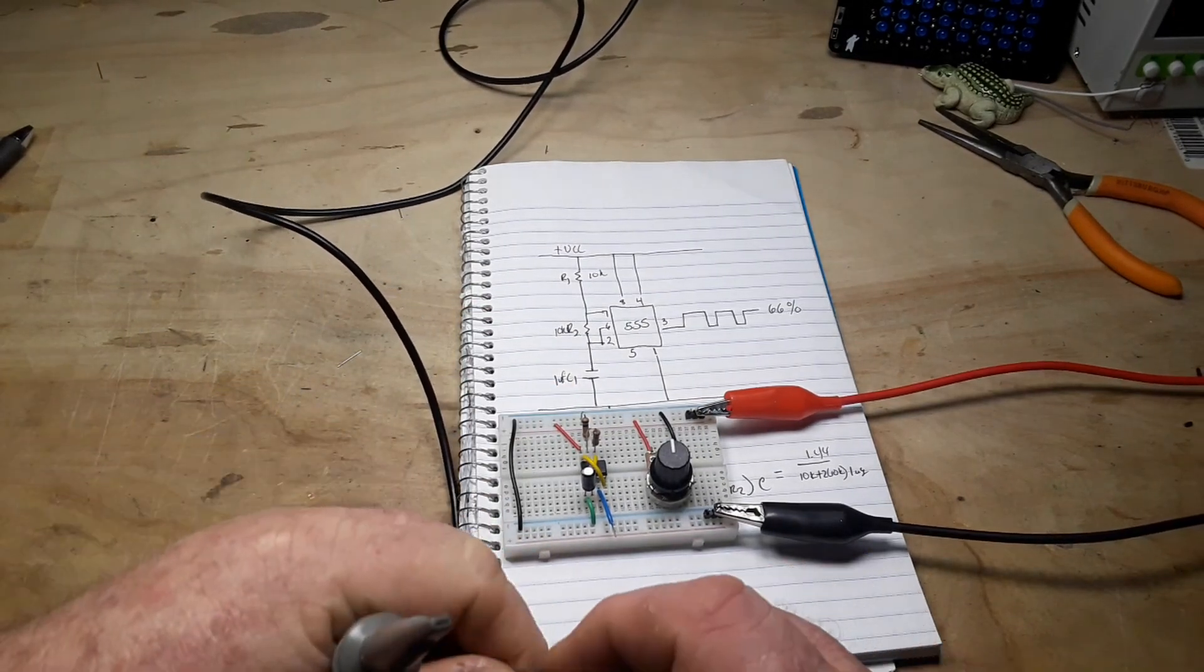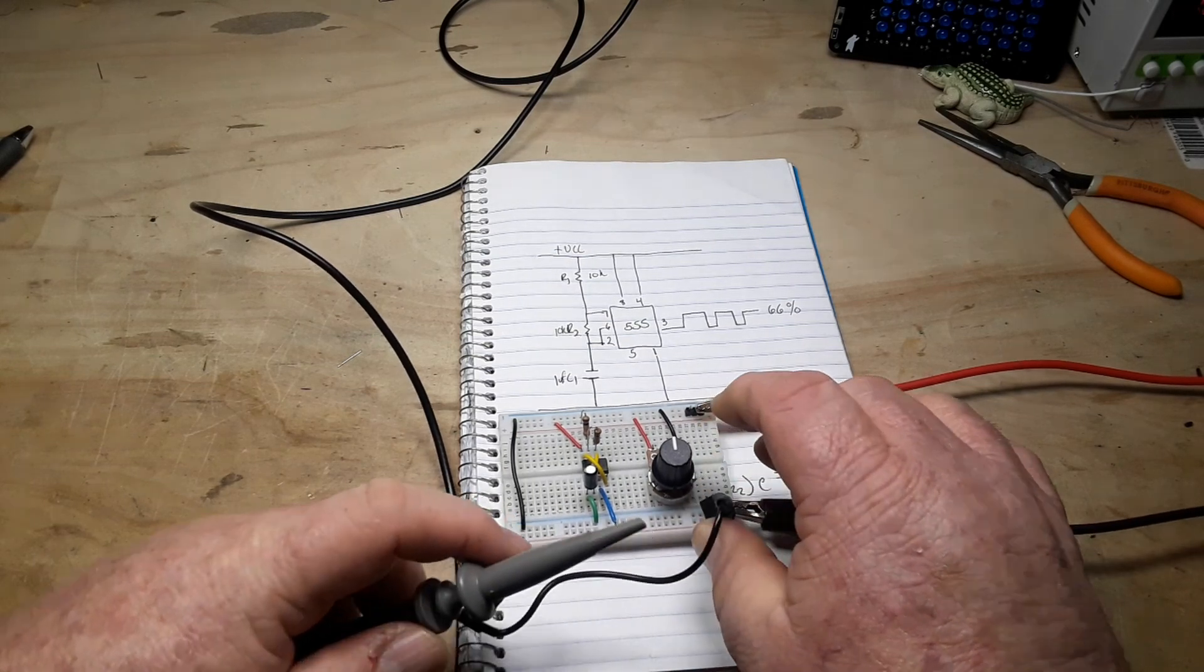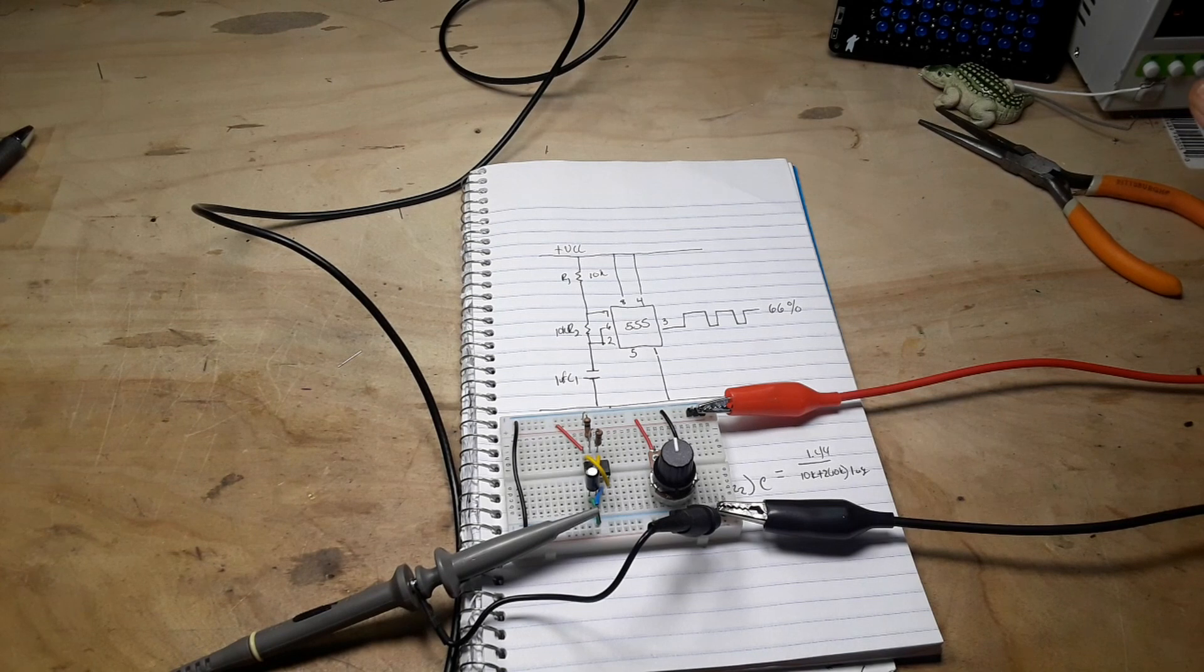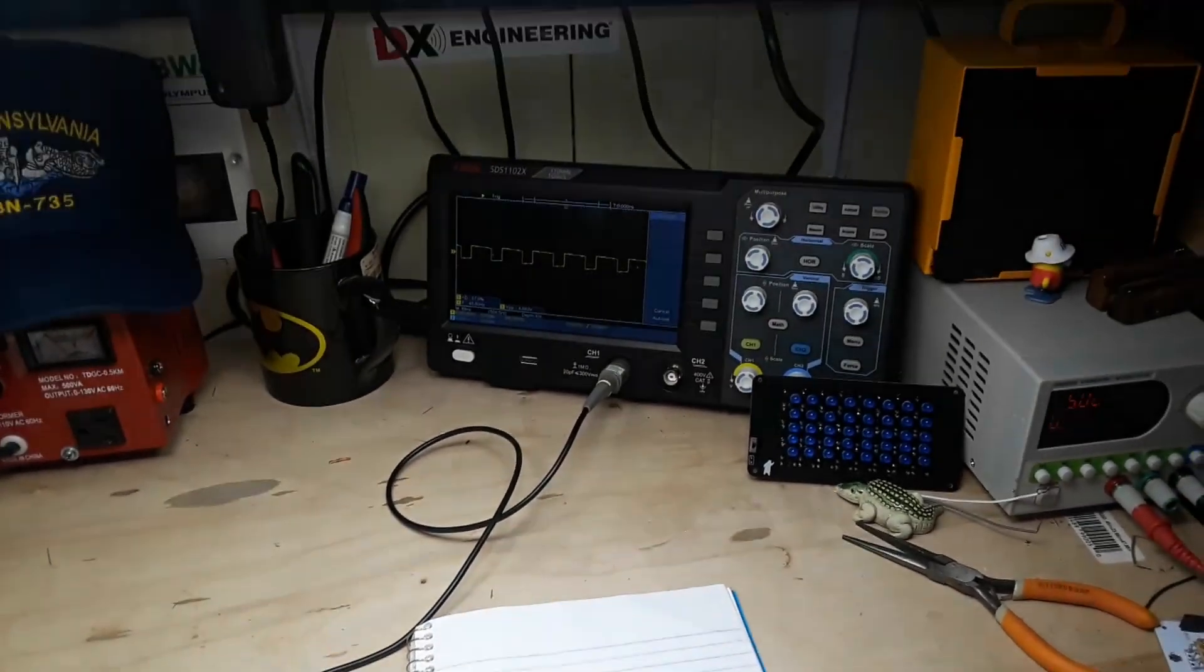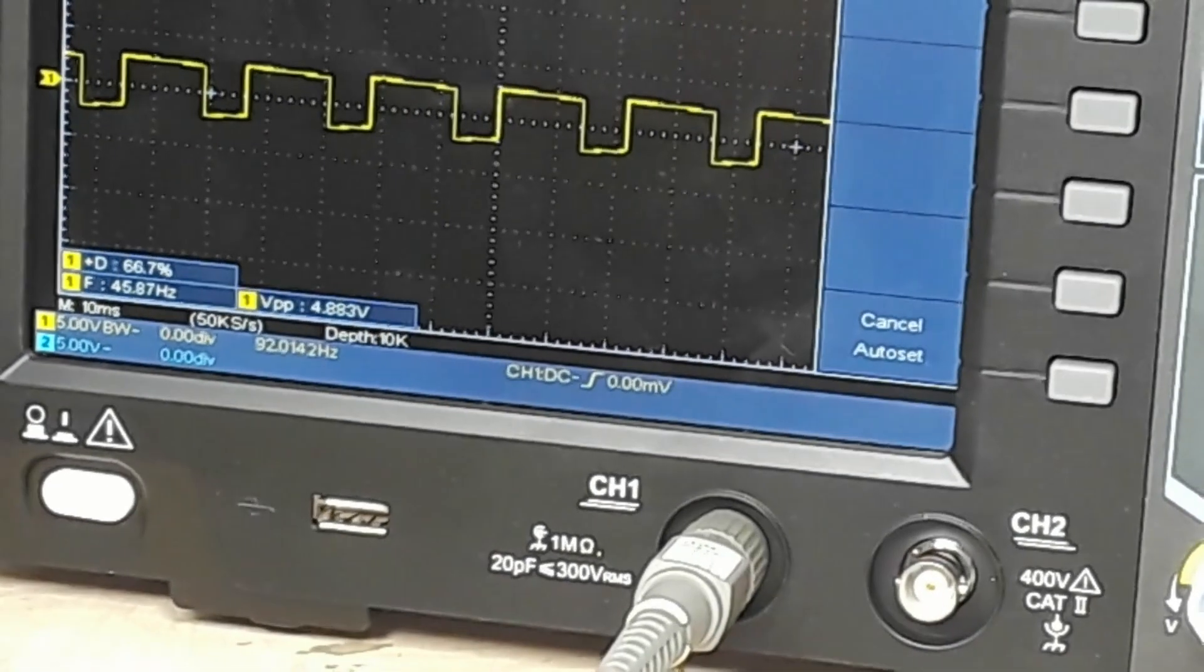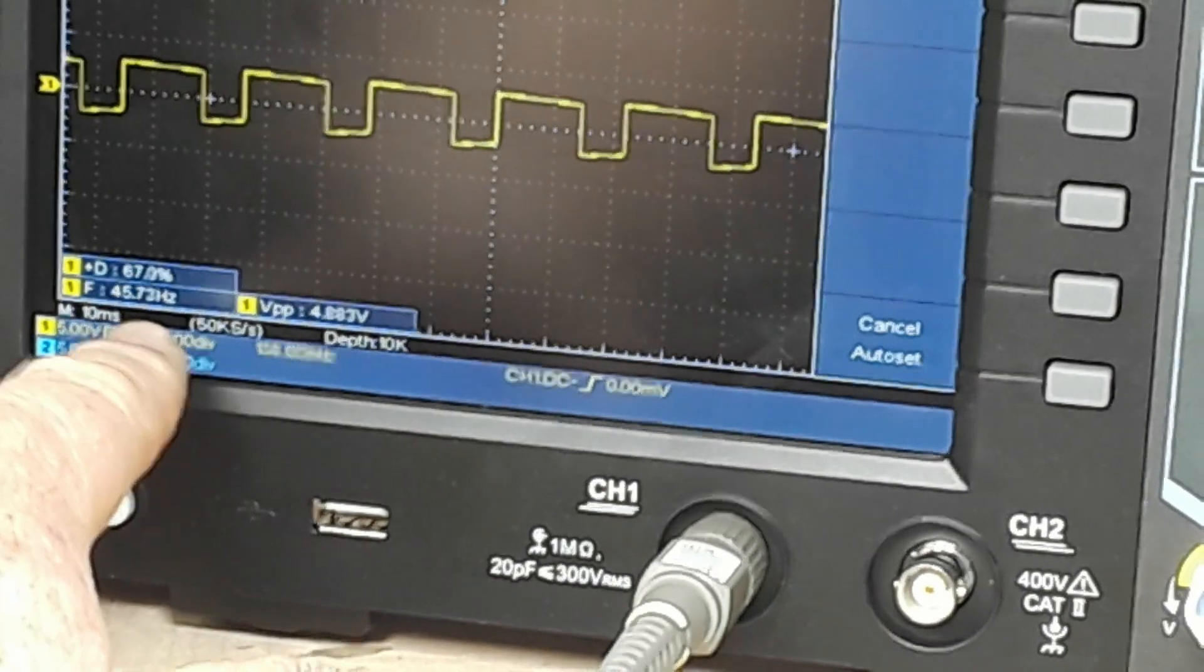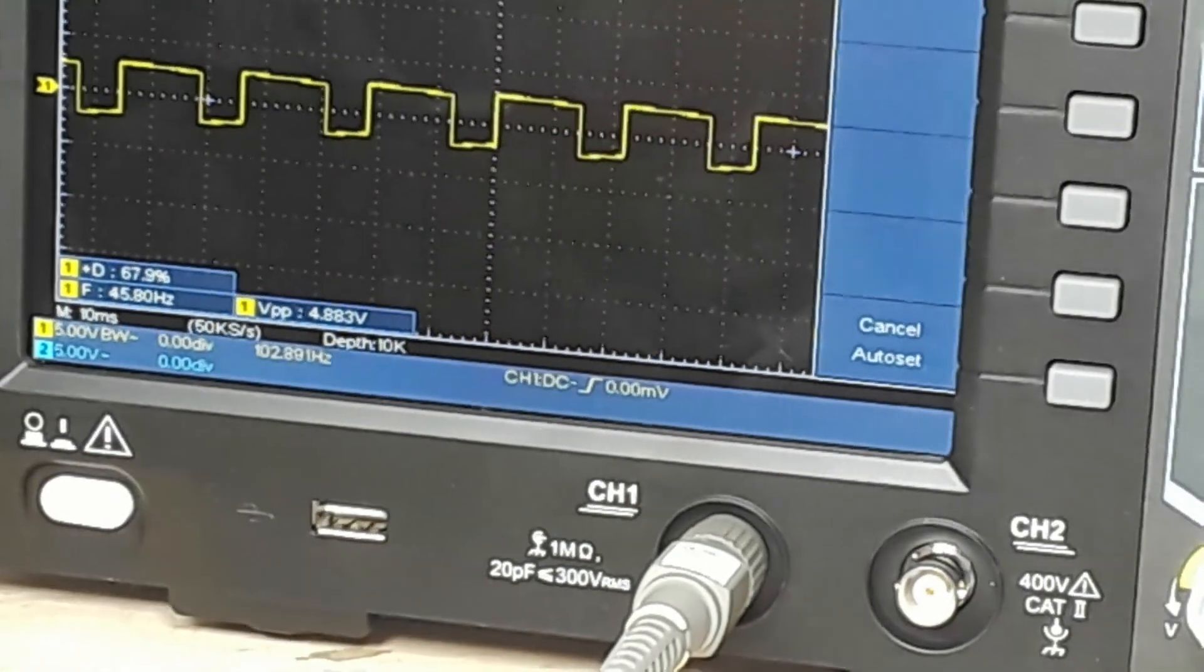So if I hook up the oscilloscope to our output and turn on the power, and I'll rotate you up here so you can see the oscilloscope and zoom in. You can see we're getting 45.8, so let's call it 46 hertz.